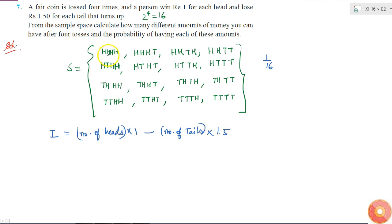In this case all 4 are heads, so what will be my income? I will be equal to 4. Here 3 heads and 1 tail, so 3 into 1 minus 1.5, this will be 1.5. Similarly this also will be 1.5. Here I have 2 heads and 2 tails, so I will win 2 rupees and I will lose 3 rupees, which is same as minus 1 rupee. So here again it is 1.5, here it is minus 1, here it is minus 1.